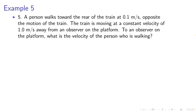Example 5. Imagine a person is walking toward the rear of a train at 0.1 meters per second, opposite the motion of the train. The train is moving at a constant velocity of 1.0 meters per second away from an observer on the platform. To an observer on the platform, what is the velocity of the person who is walking?